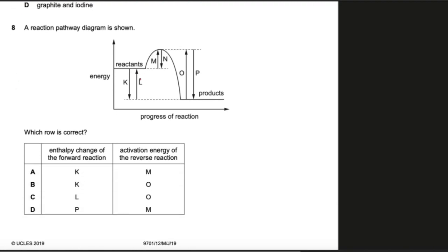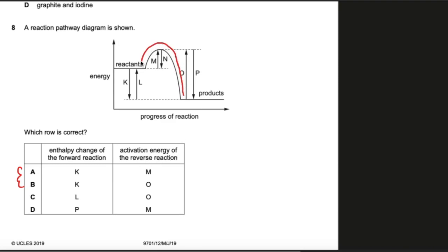Question 8: A reaction pathway diagram is shown for a reversible reaction in which reactants convert to products and back. The enthalpy change for the forward reaction is K. The activation energy for the reverse reaction always starts from the reactant energy level of the reverse reaction, which is the product energy level of the forward reaction — this activation energy is O. Therefore, the answer is option B.